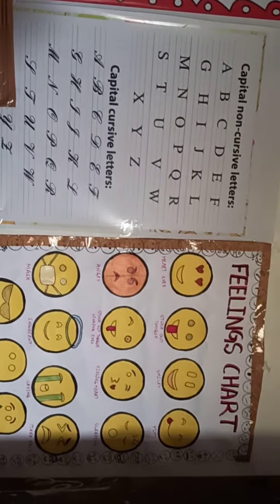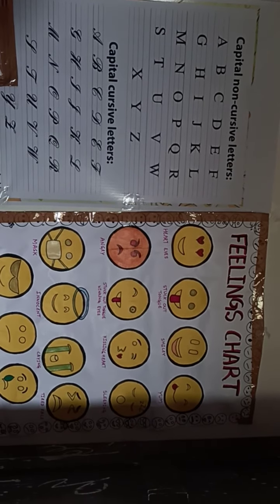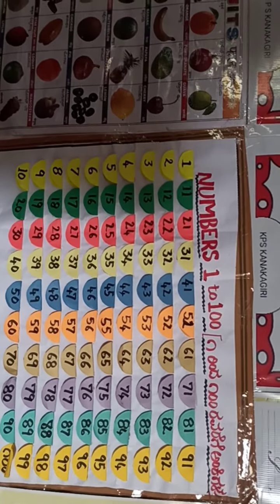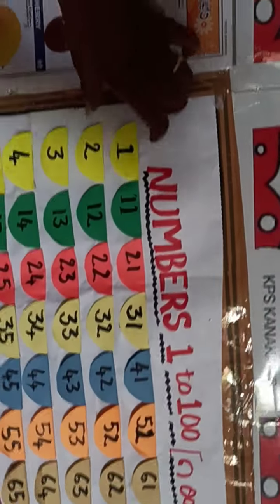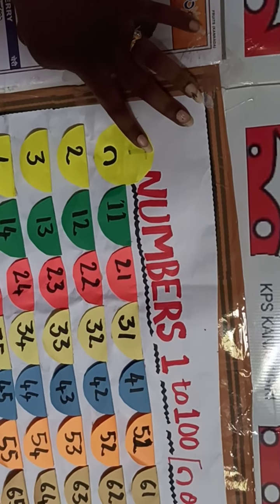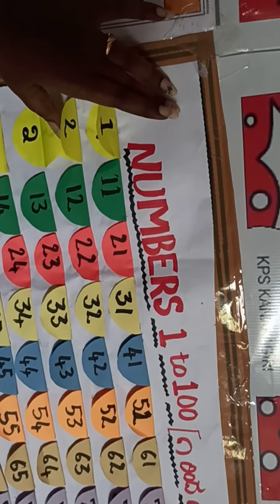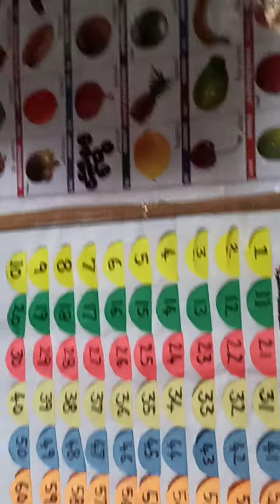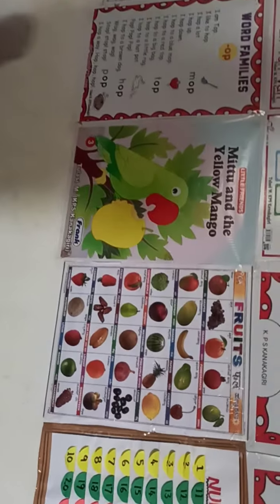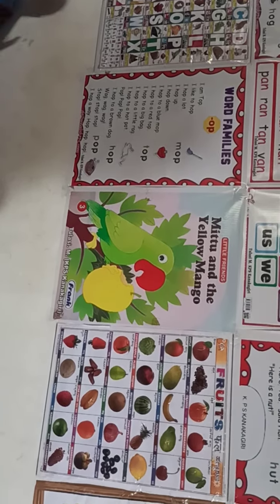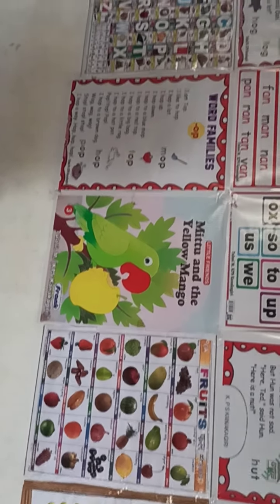And emojis to know the feelings, and good habits. This is the numbers display — like one, two, three, four. It is the fruit chart, including the mango, which is in the textbook for first standard.